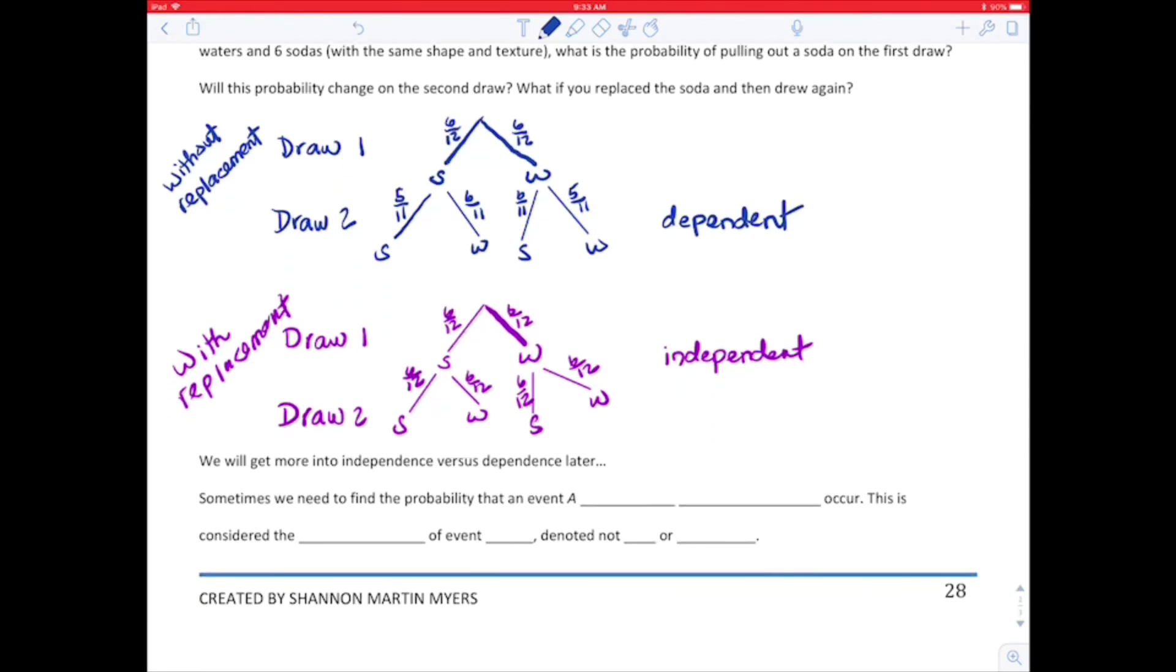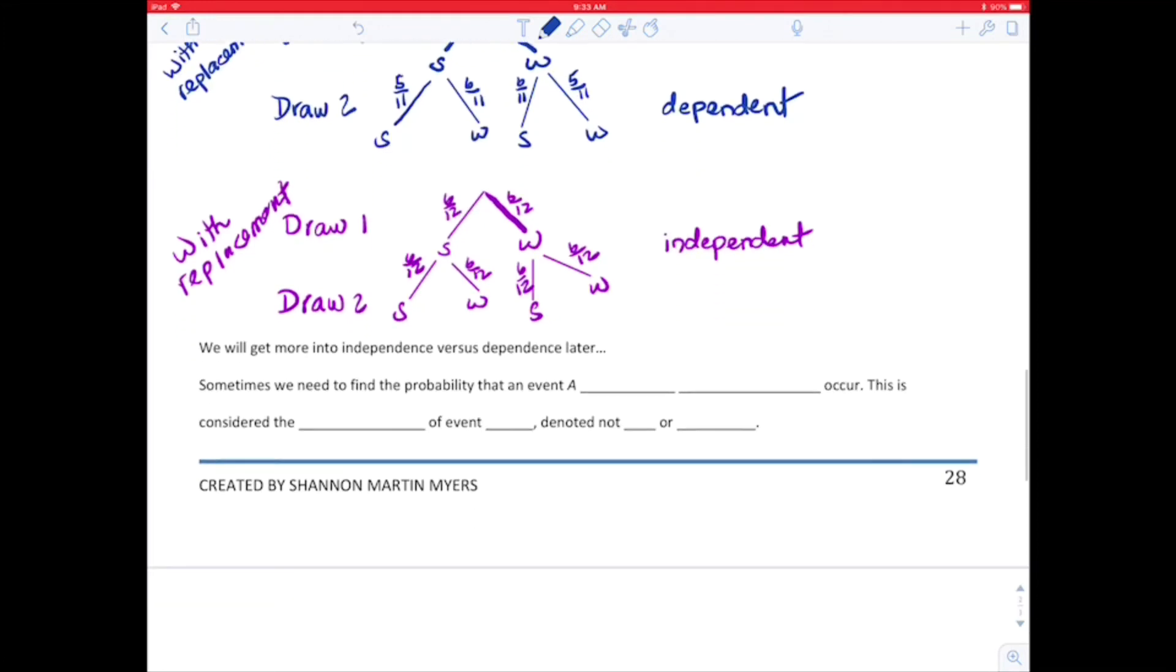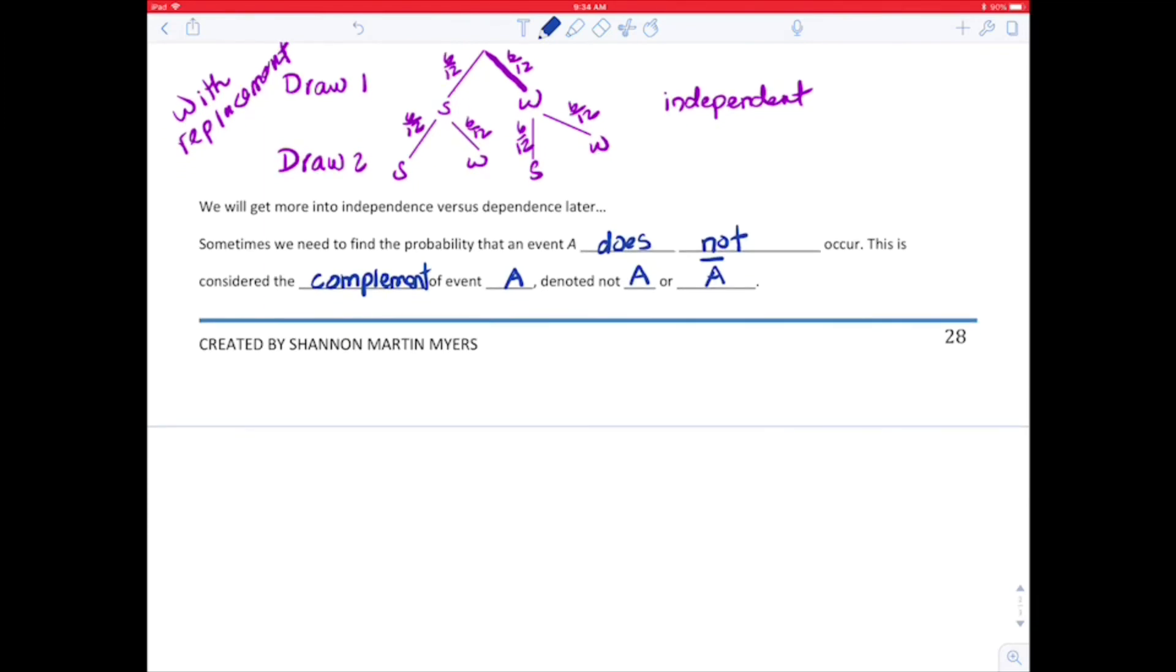So anyway, we're not going to go through and find all those probabilities or the sample space for it until you have some more advanced probabilities. But this is actually a way of modeling called a tree model. Alright, so sometimes we need to find the probability that an event does not occur. This is considered the complement. So I had called that event A, so this would be the complement of event A, denoted not A. That's how you say it, not A, and the line above means not A or the complement of A.